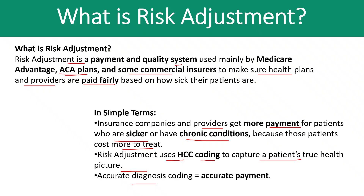We have certain risk adjustment models. For example, for Medicare insurance the payment comes from CMS, for Medicaid it is state-based, and for commercial it depends on the plan. The risk score level for Medicare insurance is beneficiary-based, while for Medicaid and commercial it is population-based. Some models are based on tiers of severity, some on chronic conditions, and some include both acute and chronic conditions.